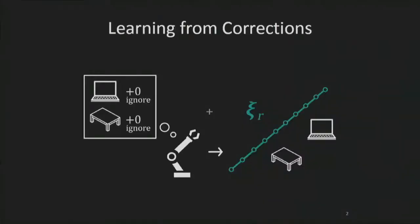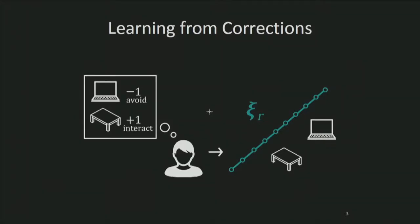Hello, I'm Dylan. Learning from corrections is an iterative process. The robot starts with an estimate of the human's preferences and performs the optimal trajectory with respect to that estimate. For example, here the robot thinks that it should ignore both the laptop and table. The human end user actually wants the robot to avoid the laptop but move across the table. The human therefore takes the robot's current trajectory and corrects it to better match their preferences.